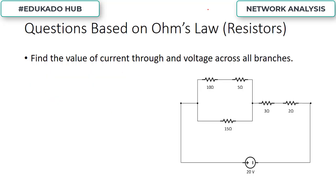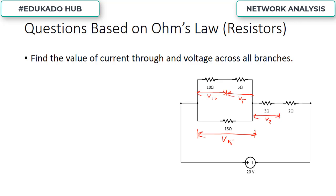The first question is: find the values of current through and voltages across all the branches. As we know, in series voltage gets divided and in parallel voltage remains the same, but in parallel current gets divided and in series current remains the same. With respect to that, let us assume that voltage across the 15 ohm resistance is V15, voltage across 10 ohm will be V10, voltage across 5 ohm is V5, voltage across 3 ohm is V3, and voltage across 2 ohm is V2.